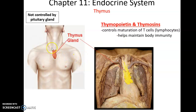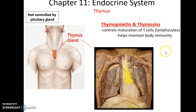The thymus is found in the thoracic cavity, superior to the heart. It is involved in the maturation of T-cells (T-lymphocytes), which are important for our immune response. The hormones thymopoietin and thymosin — both starting with 'thymo' — are produced by the thymus to help in the maturation of T-cells.